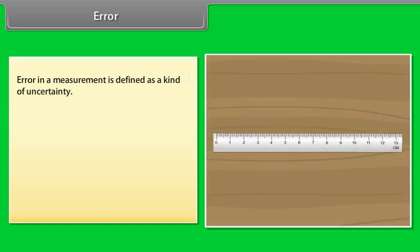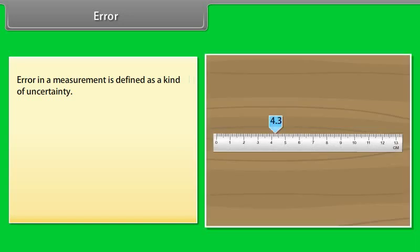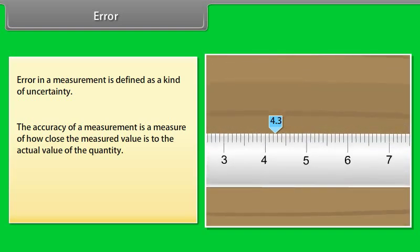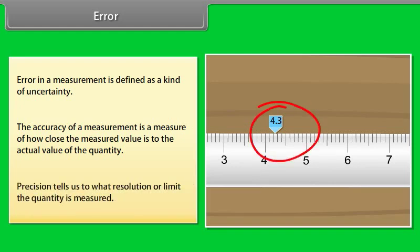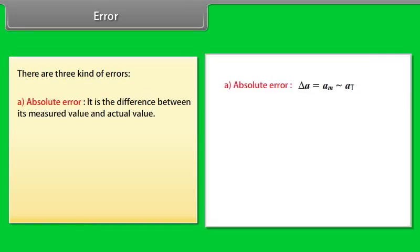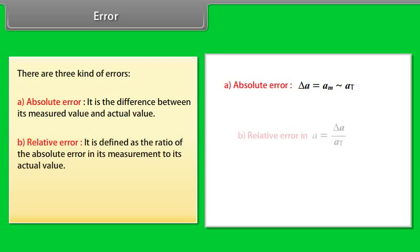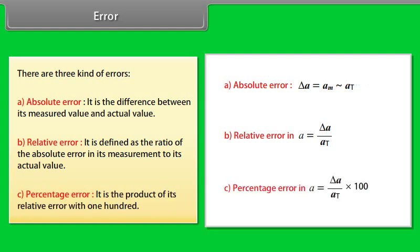Error: The result of every measurement by any measuring instrument contains some uncertainty. Error in a measurement is defined as a kind of uncertainty. The accuracy of a measurement is a measure of how close the measured value is to the actual value of the quantity. Precision tells us to what resolution or limit the quantity is measured. There are three kinds of errors: (1) Absolute error - the difference between its measured value and actual value, (2) Relative error - the ratio of the absolute error in its measurement to its actual value, (3) Percentage error - the product of its relative error with 100.